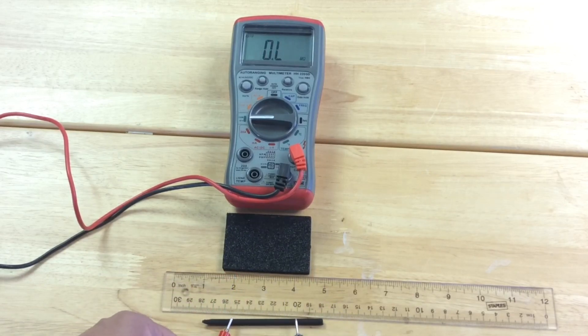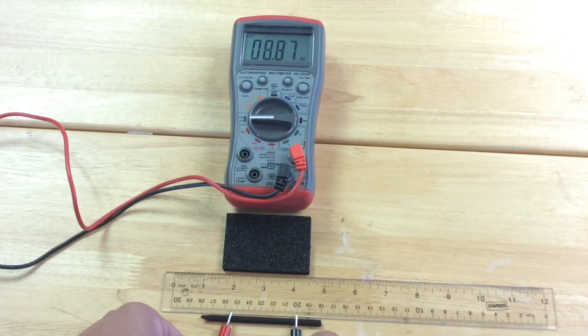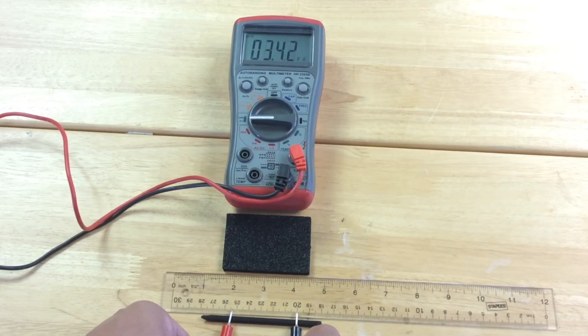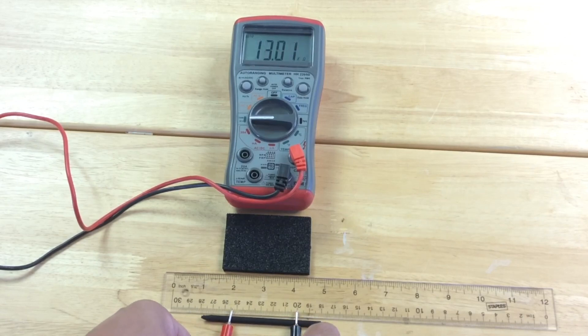So then I checked the stylus and it was conductive but it was showing a lot higher resistance. 12 to 15k, somewhere in that range.